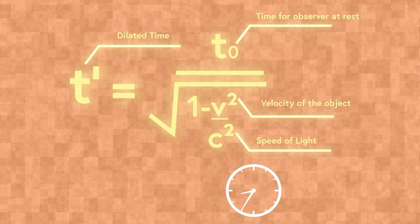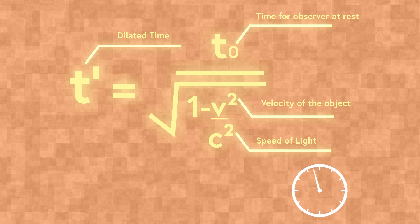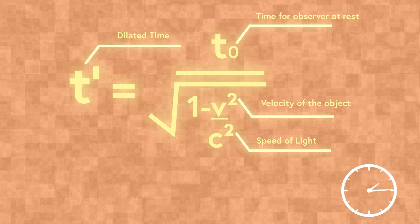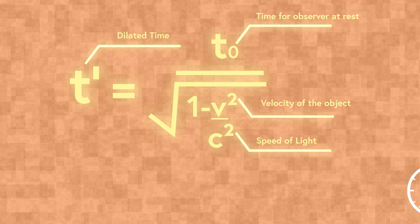But the exact nature of these changes would depend on how other physical laws adjust. Since relativity assumes C is a fundamental constant, changing it would likely require reworking many equations beyond just time dilation.